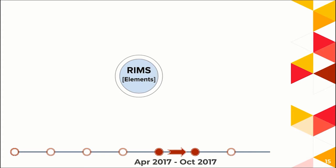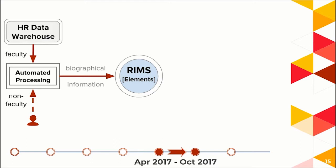In the end, this is essentially what the system looks like now. Between April and October 2017, we have a RIMS for the entire institution. Essentially, data is extracted from a central HR data warehouse, we do some automated cleaning and formatting for ingestion into the RIMS, and we also allow non-faculty to sign up via an online form. Once a faculty member has their search parameters refined, the RIMS does the work of automatic publication harvesting and tries to handle some of the deduplication and disambiguation.